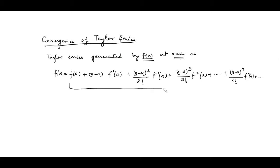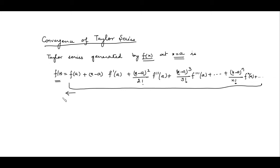We can check the convergence of this series by applying the ratio test, the same way as we did for power series — for what values of x the given series is convergent. We can check whether this series is convergent over some interval. The next question is whether this series, generated by f(x), converges to the same generating function or not. The answer is: not always.